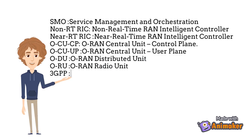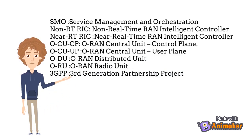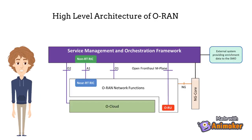3GPP stands for Third Generation Partnership Project. Let's first look at the high-level architecture of ORAN. In this architecture, only high-level interfaces have been marked. On the right side bottom, you can see the NG interface that is between the open RAN network functions and the new generation core. This interface has been defined by 3GPP.